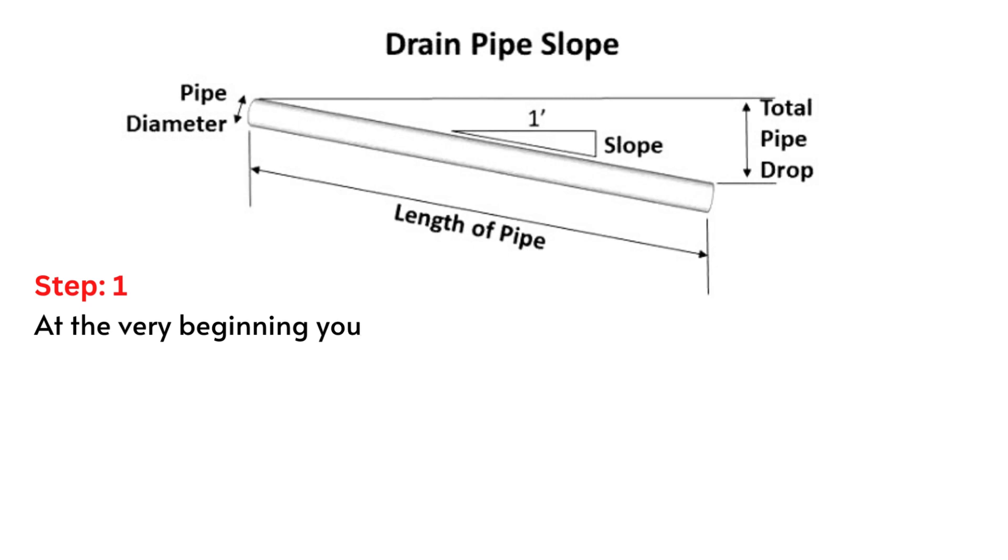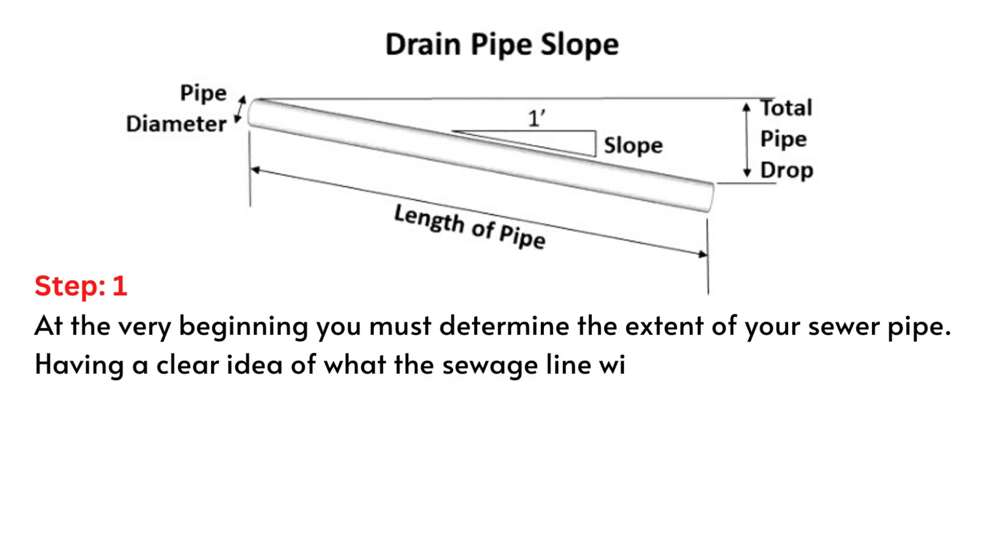Step 1. At the very beginning, you must determine the extent of your sewer pipe. Having a clear idea of what the sewage line will travel and where it will meet will accomplish half of your work.